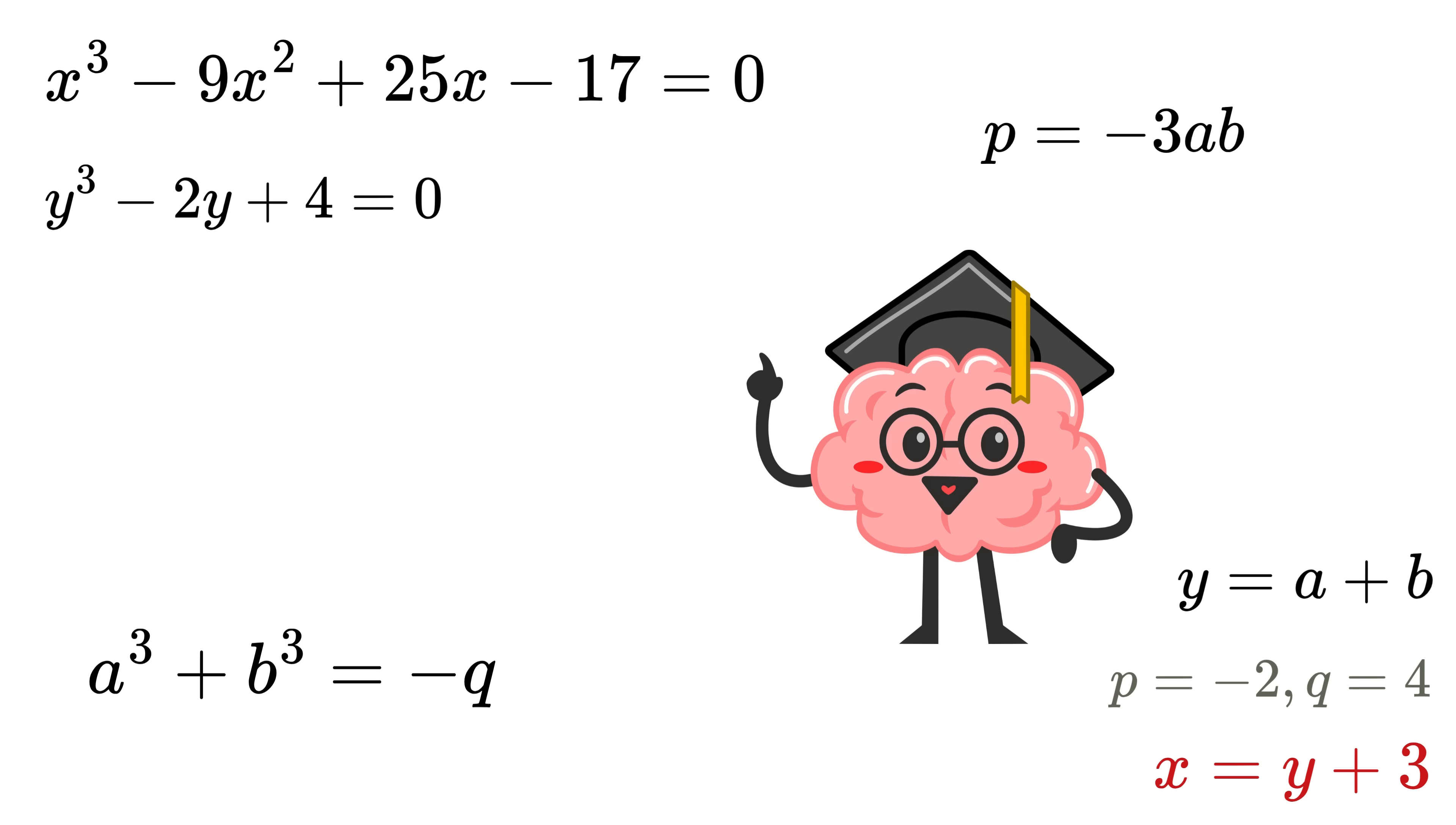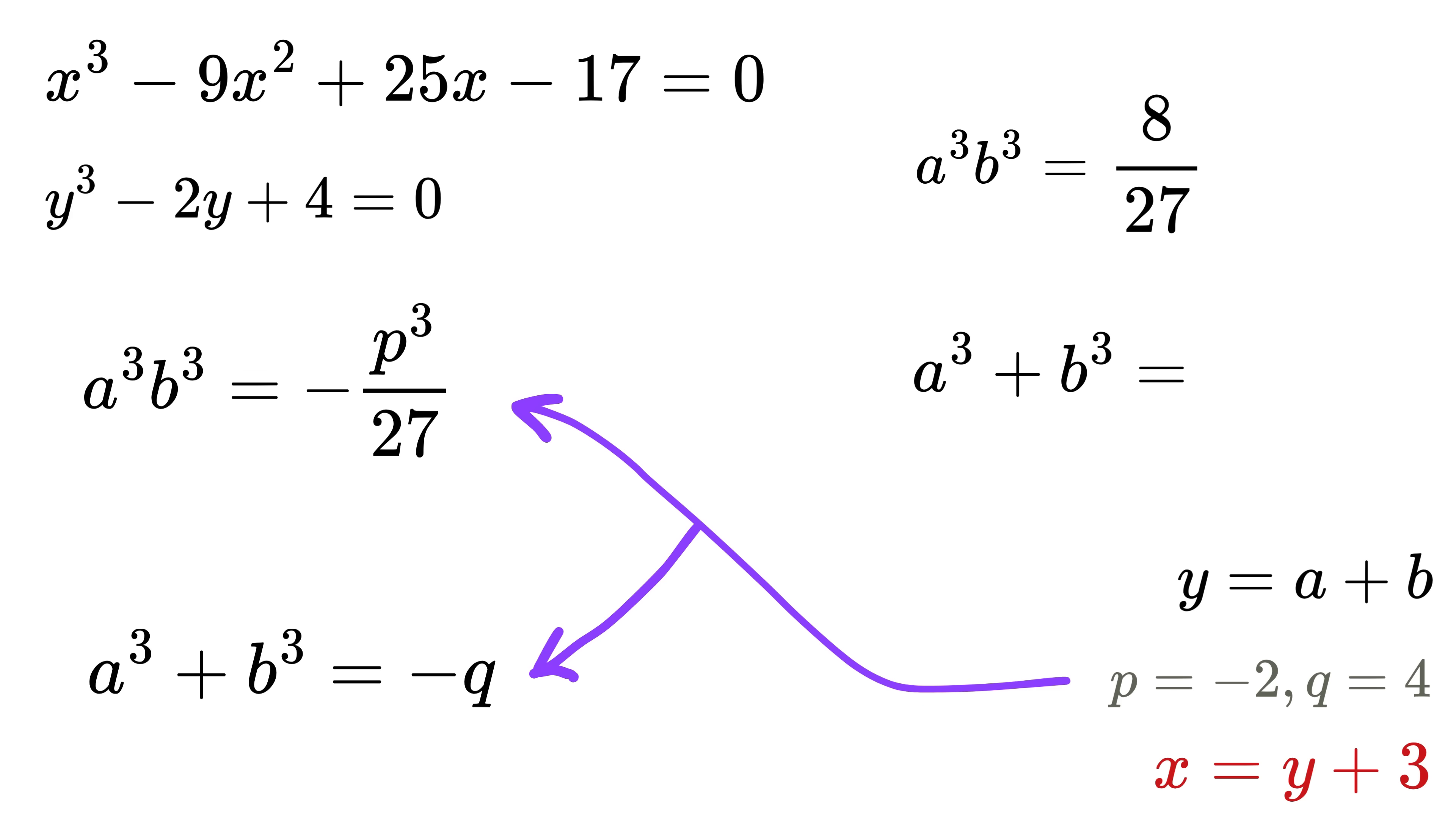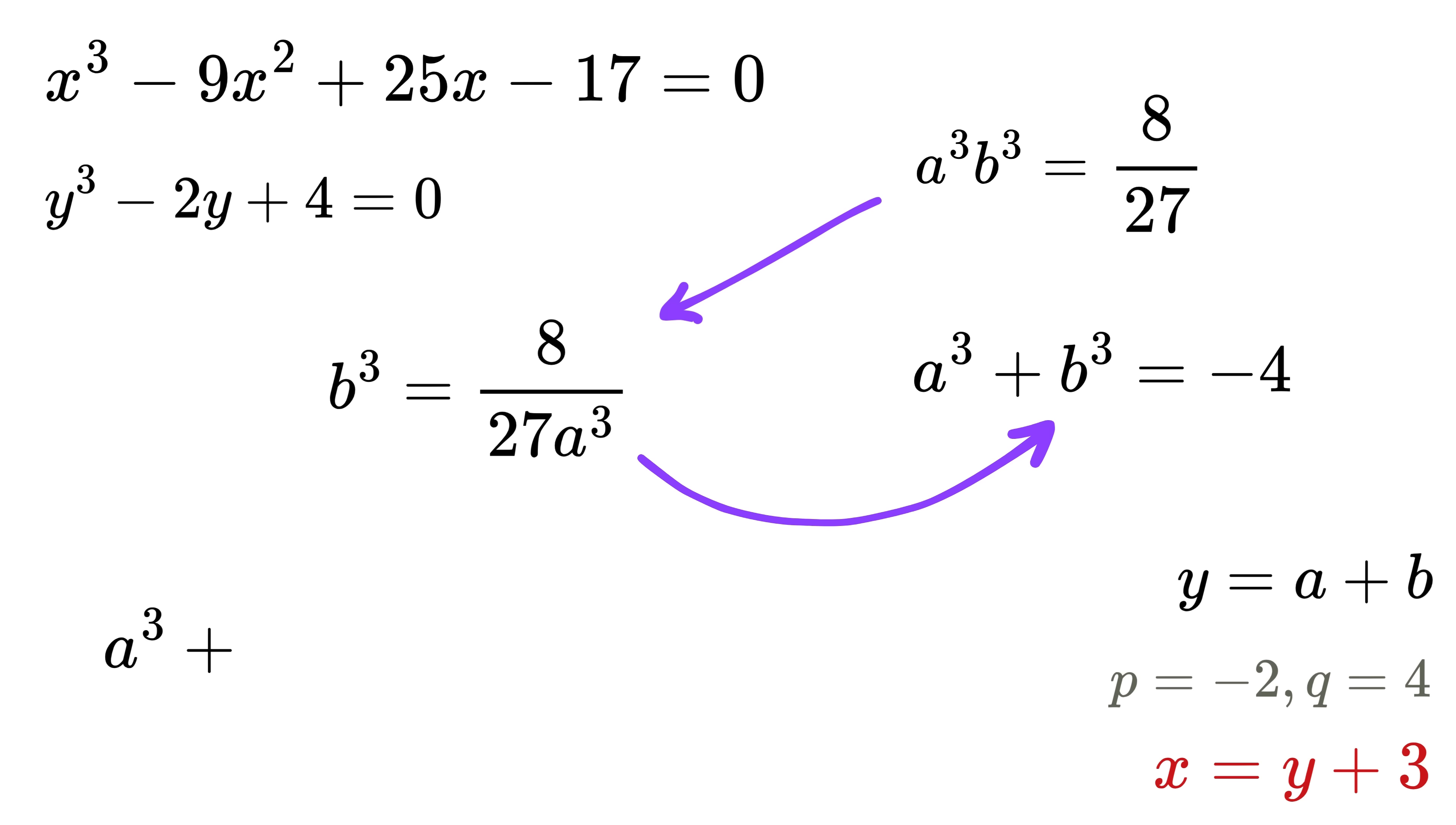Now we are going to do something clever. ab = -p/3. Cube both sides to get a³ × b³ = -p³/27. Now substitute p and q to get a³ × b³ = -(-2)³/27, or this will become 8/27. And a³ + b³ = -4. Now from here, b³ = 8/(27a³). Substitute it here to get a³ + 8/(27a³) = -4.